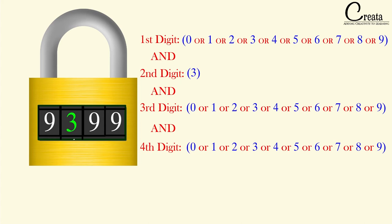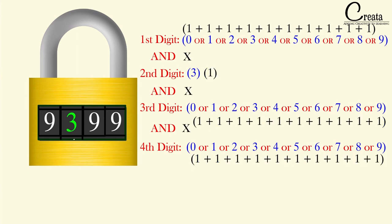Now you are able to understand the logic — where to apply AND and where to apply OR. This is the basic and you should know it. This fundamental will be applicable all over permutation, combination and probability. We have got the equation with various ORs and ANDs. Replacing OR with addition and AND with multiplication, we get 10 × 1 × 10 × 10, so the answer is 1000 different sequences that we can form to open the lock.